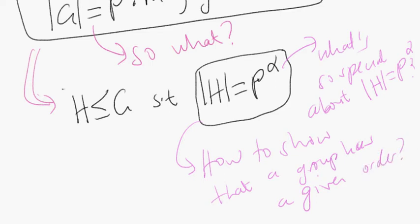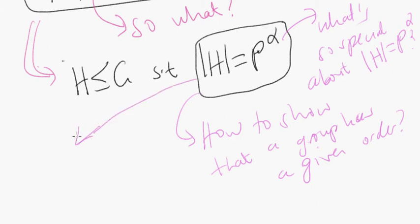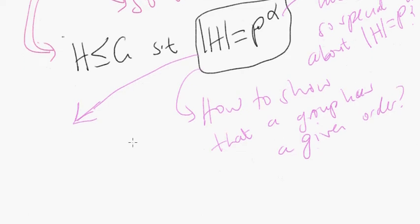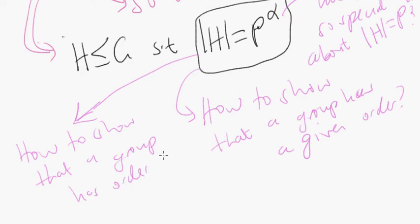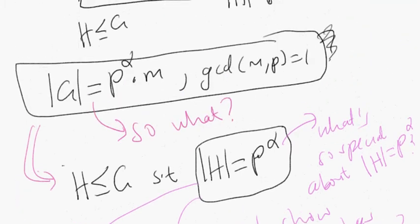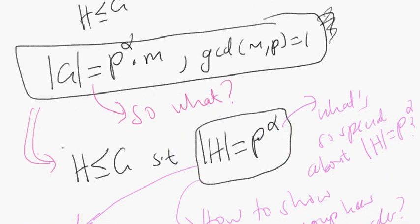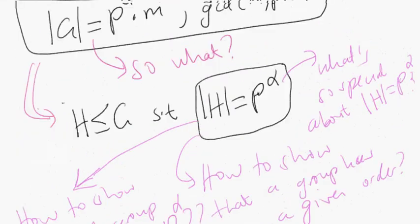In what ways can we show that a group has a given order? And how do we show that a group has order p to the alpha — a prime power? Those are questions begged by this problem. Another question: what if p and m were not relatively prime? Would we still be able to have a subgroup of order p to the alpha?